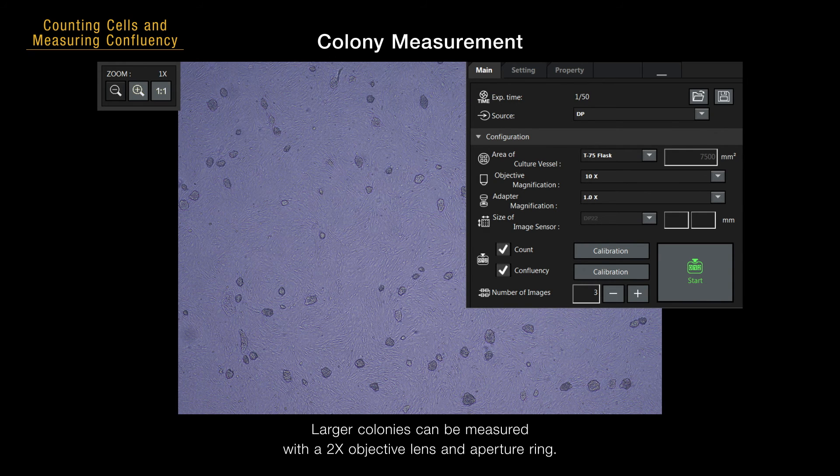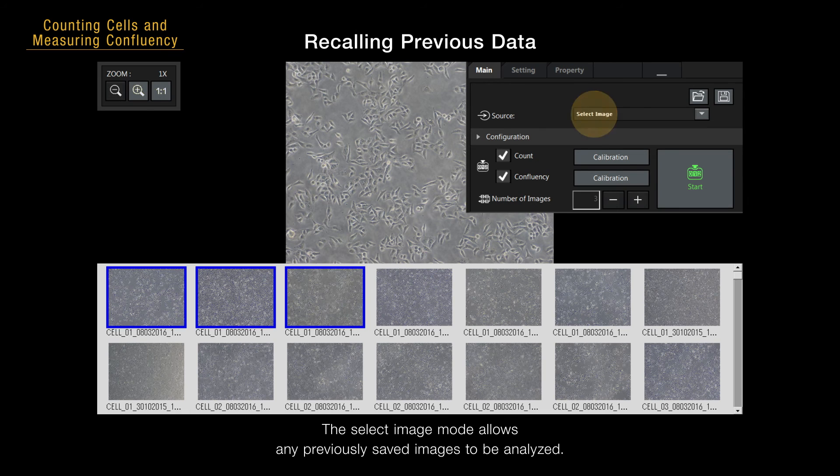Larger colonies can be measured with a 2x objective lens and aperture ring. The select image mode allows any previously saved images to be analyzed.